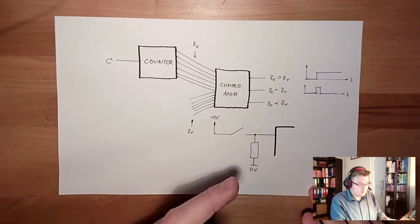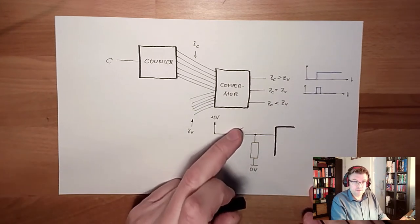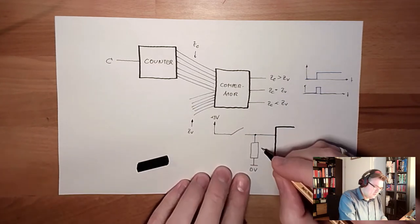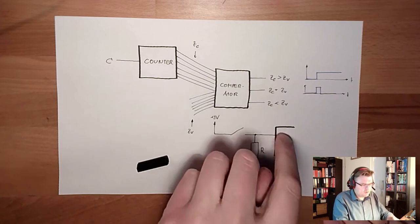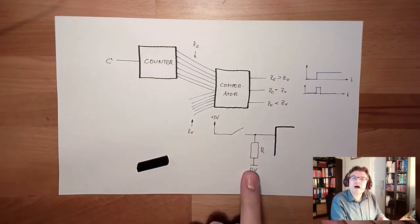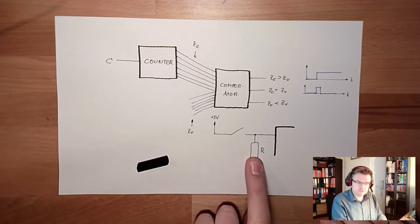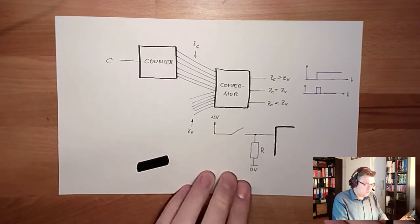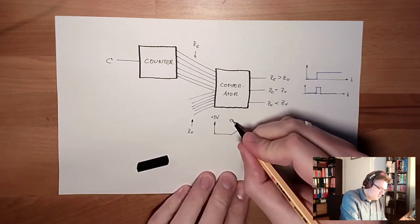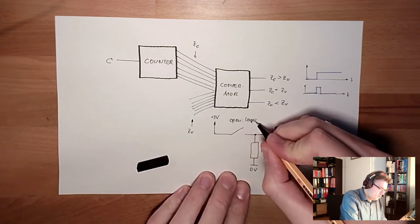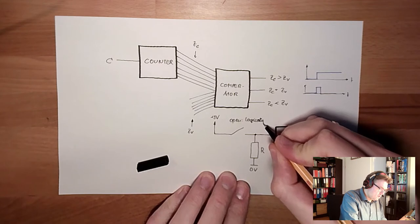Whenever this switch is open, I have 0V because this resistor here is pulling down this line to 0V. This is why it's called a pull down resistor. So open, logically 0V.